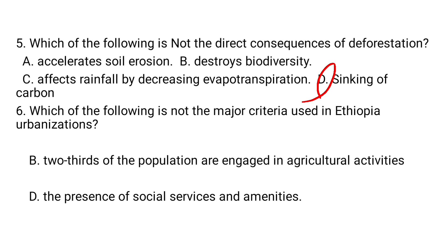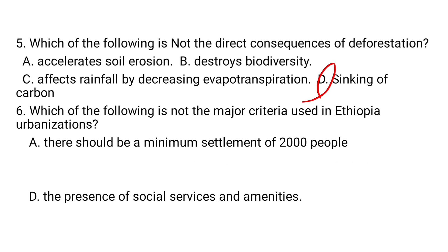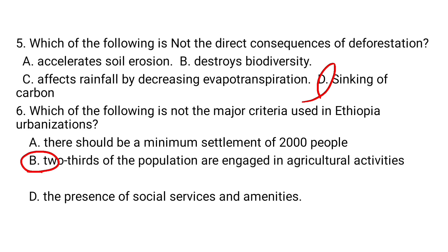Question number 6. Which of the following is not a major criterion used in Ethiopian urbanization? A. There should be a minimum settlement of 2,000 people. B. The majority of the population are engaged in agricultural activities. C. The settlement has a chartered municipality. D. A presence of social services and amenities. The answer is B.